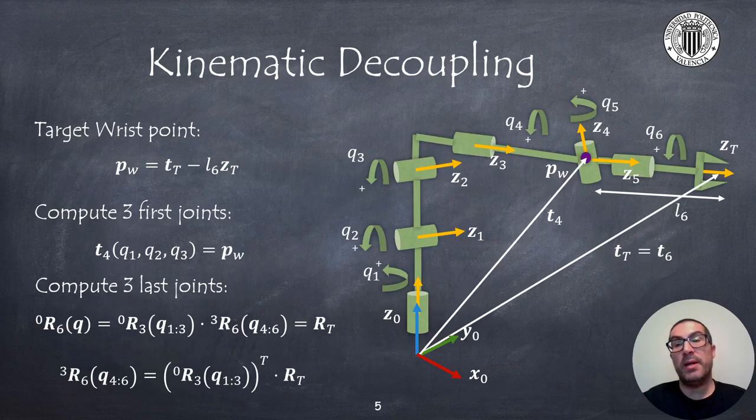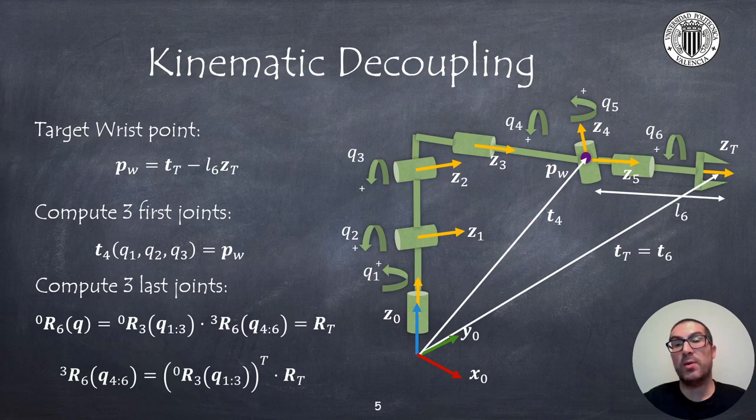The kinematic decoupling appears when using the spherical wrist so that with joints Q4 and Q5, we can set where the tool must point, providing Q6 the orientation of the tool along such direction. The wrist point can be computed from the target position T_T minus the distance from the wrist to the end effector with the vector of the tool orientation, which is denoted here as ZT. Once the wrist point is known, we can compute the desired values for Q1, Q2 and Q3.